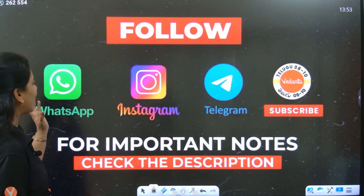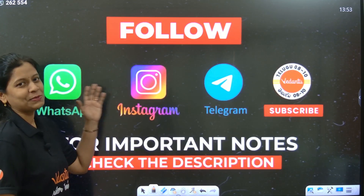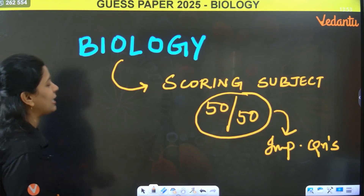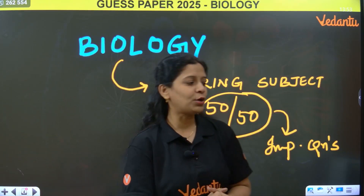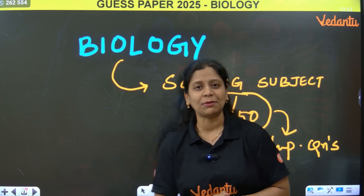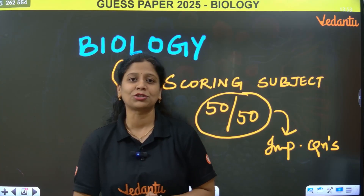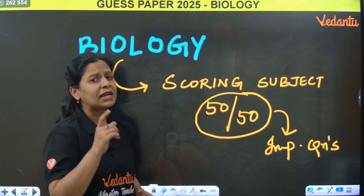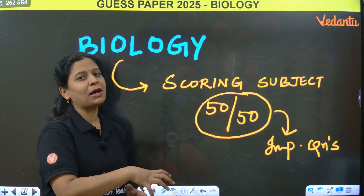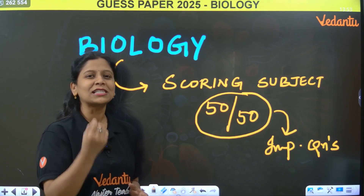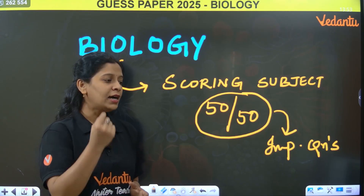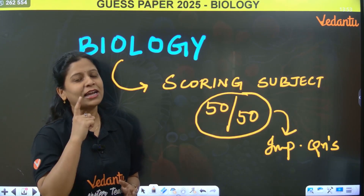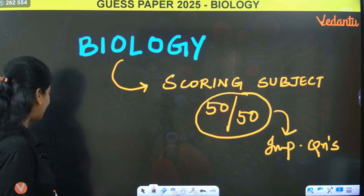You can connect with us on WhatsApp, Instagram, Telegram, and don't forget to subscribe to the channel. First of all, biology is a lot of scoring subject, right? 50 by 50 — that will improve your overall score. With these important questions, we can definitely surely get 50 out of 50.